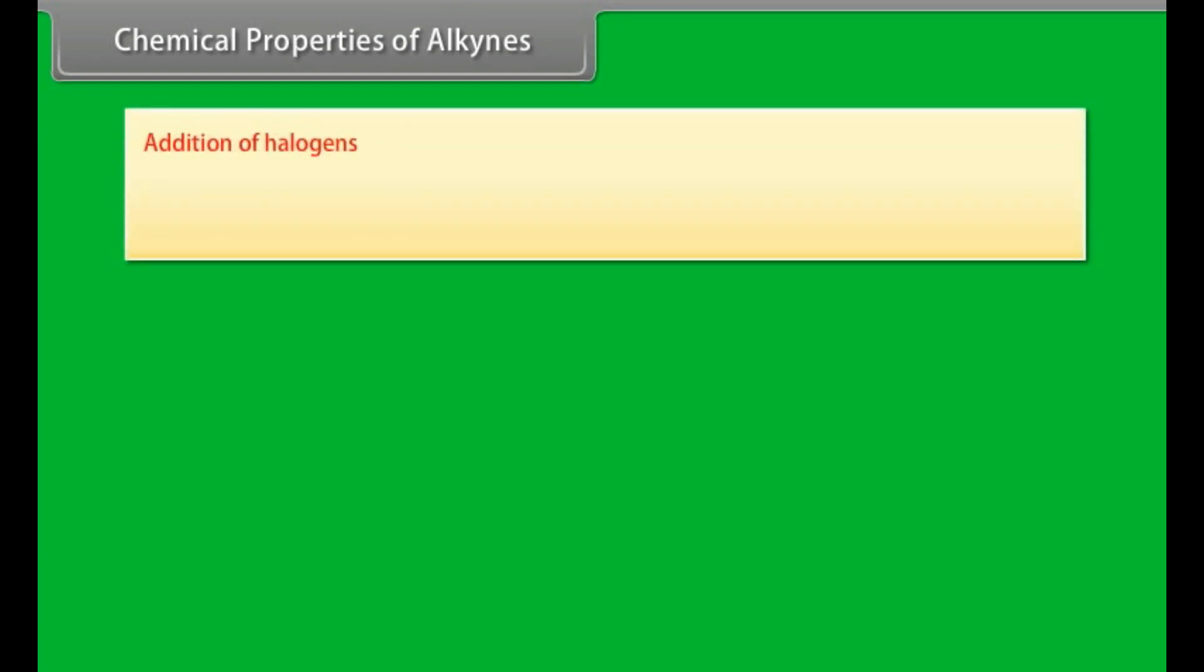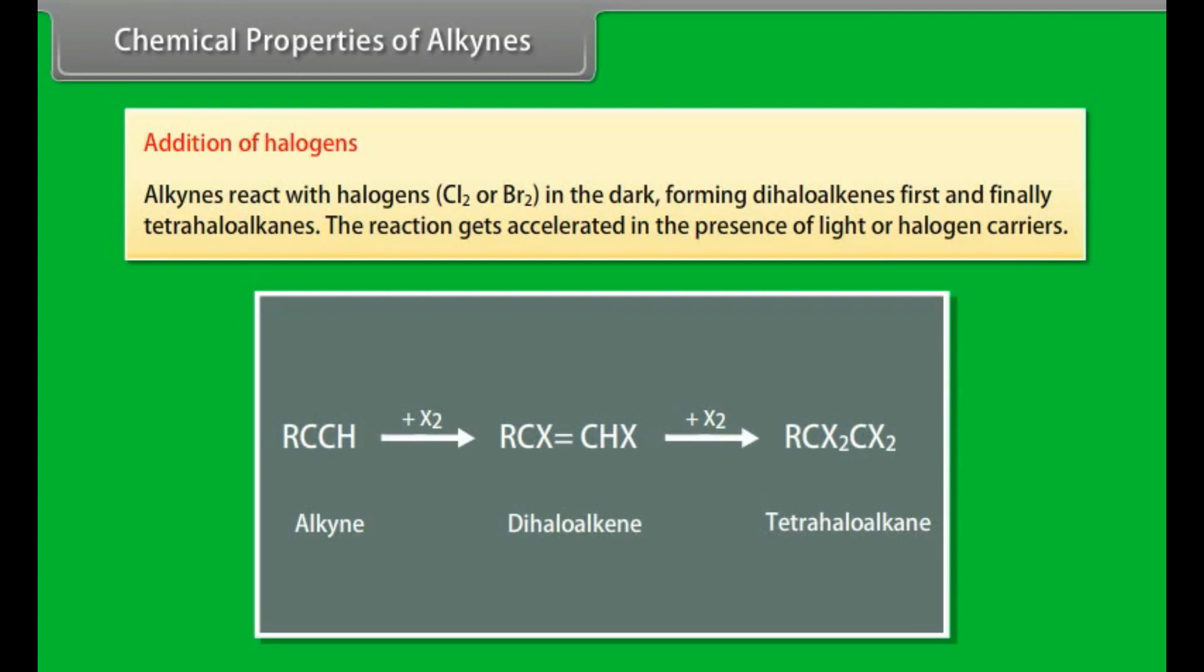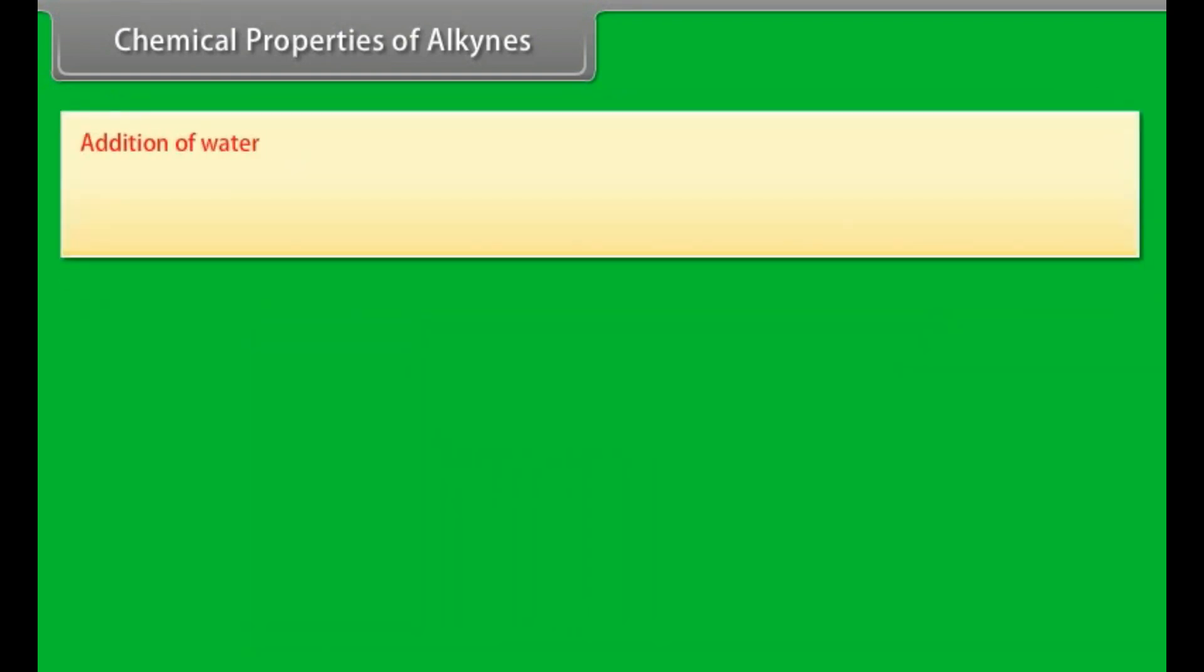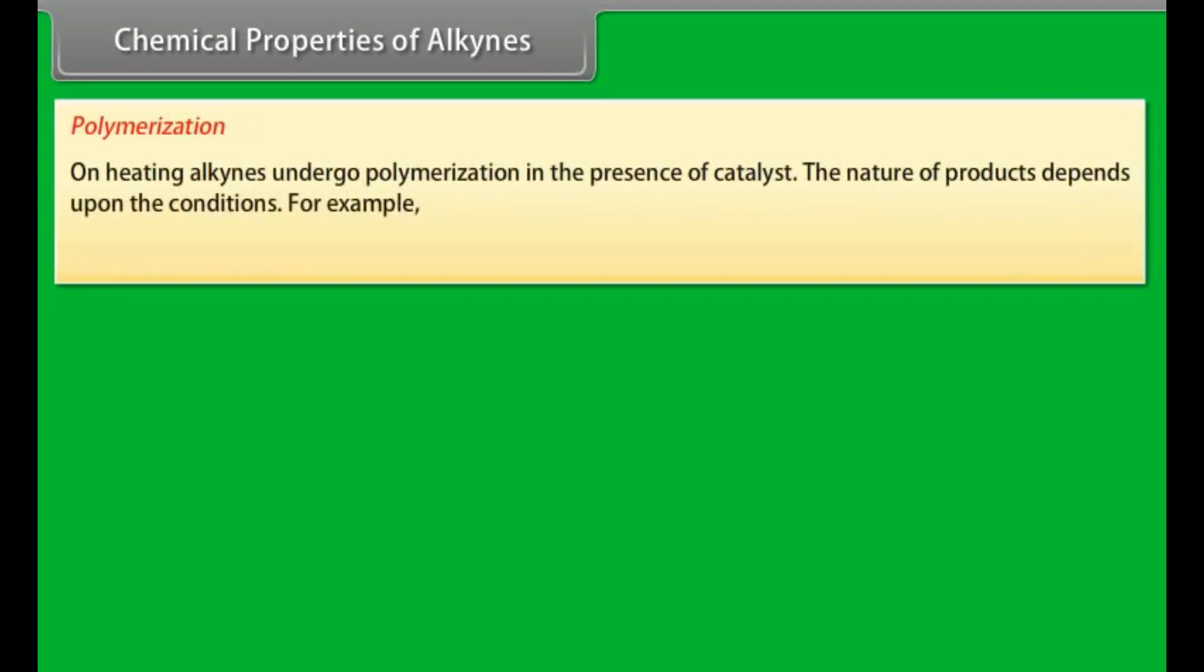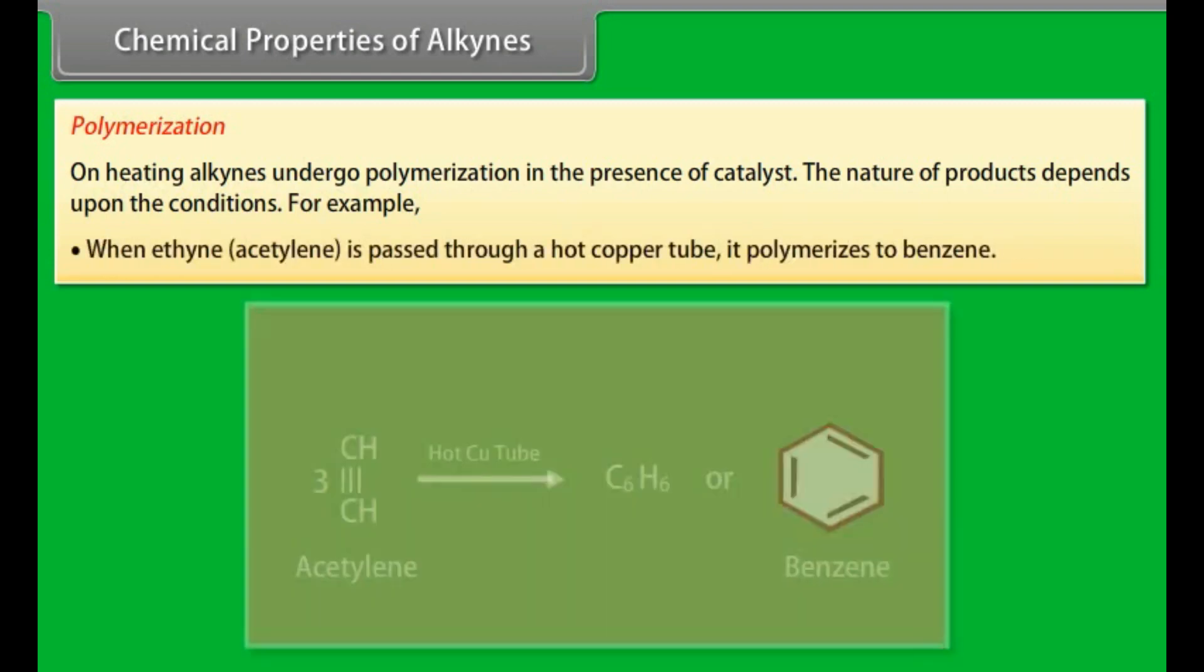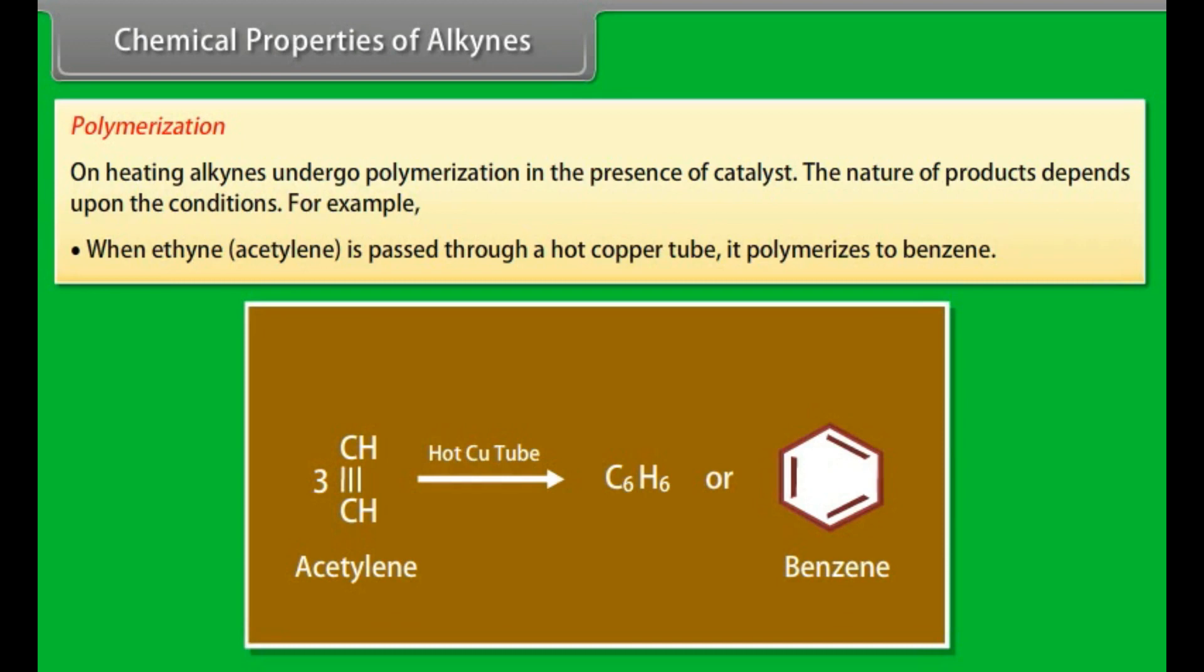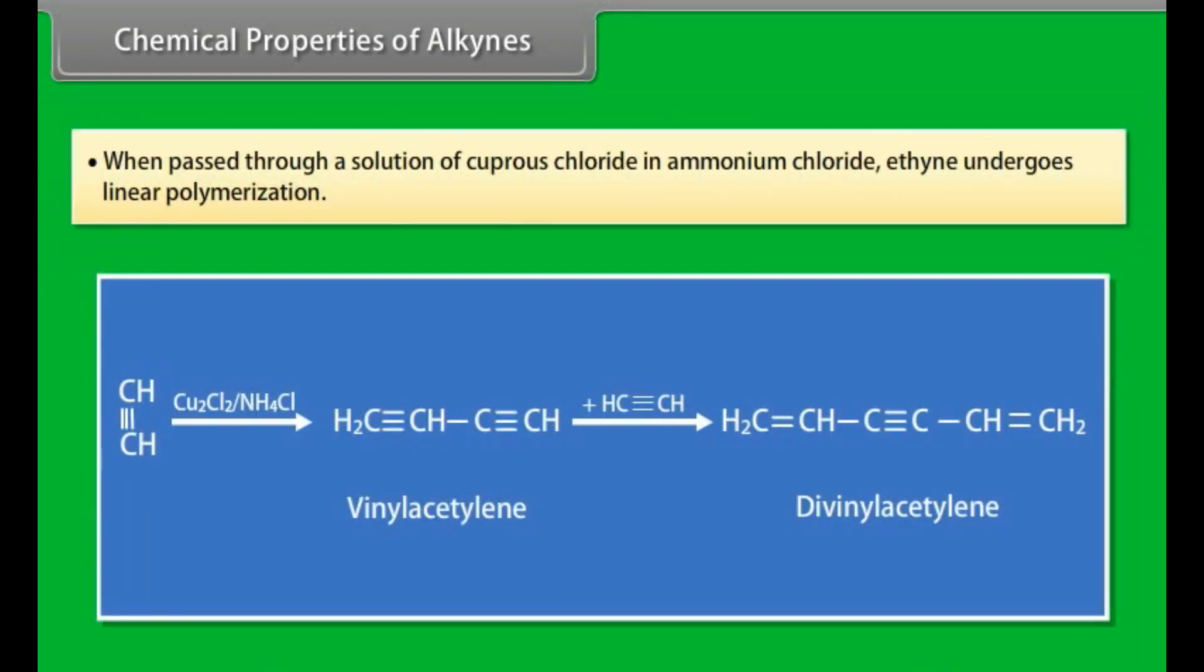Addition of halogens. Alkynes react with Cl2 or Br2 in the dark, forming dihalogenated alkenes first and finally tetrahaloalkanes. The reaction gets accelerated in the presence of light or halogen carriers. Addition of water. In the presence of sulfuric acid 42% and 1% mercuric sulfate at 60 degrees centigrade, alkynes add on one water molecule to give aldehydes or ketones. For example, ethyne gives ethanal and propyne gives acetone. Polymerization. On heating, alkynes undergo polymerization in the presence of catalyst. The nature of products depends upon the conditions. For example, when ethyne, acetylene, is passed through a hot copper tube, it polymerizes to benzene. When passed through a solution of cuprous chloride in ammonium chloride, ethyne undergoes linear polymerization.